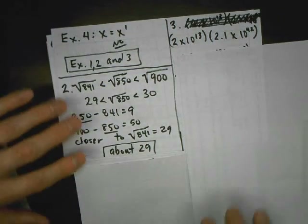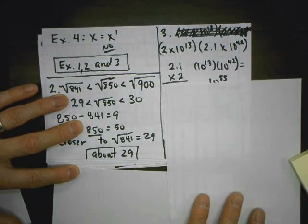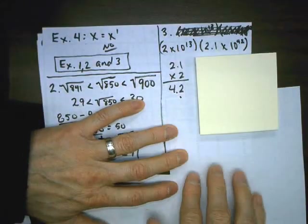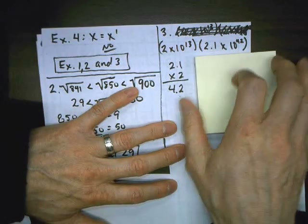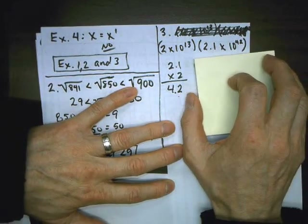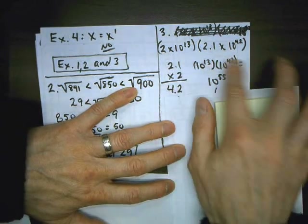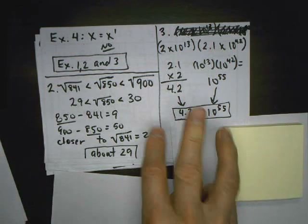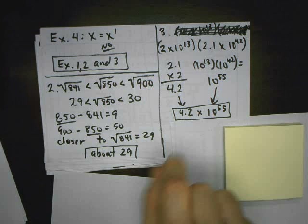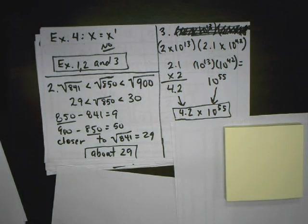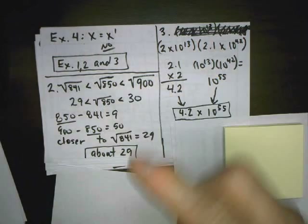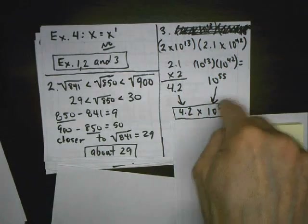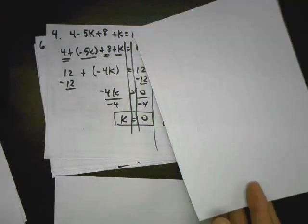Problem 3: we have to find the product, so I take my two coefficients — the two numbers in front — and multiply those. Go ahead and pause the video and do that yourself. Now when we do the powers, just like before, we copy the power and add the exponents, so I bring those two together and I'm done. If the decimal was in the wrong place, I'd have to move it — we do three arrows for that lesson — and that would affect the exponent. If it's a big number, I'd add the number of places I moved the decimal; if it's small, I'd subtract.